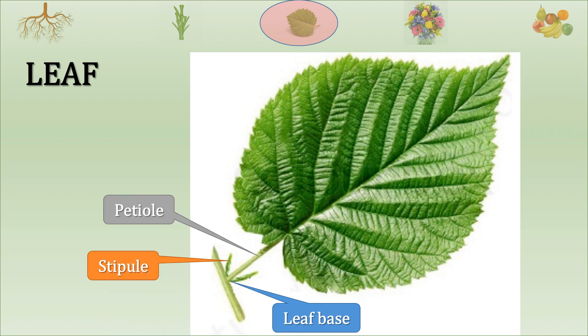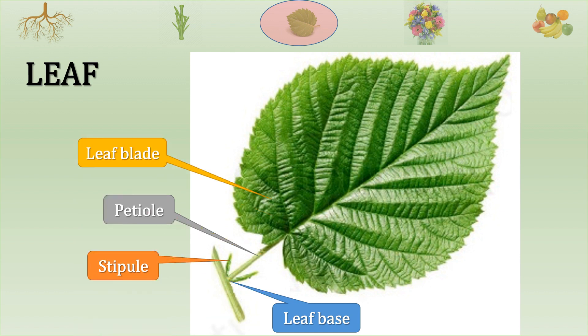Leaves of some plants have a stalk called a petiole. The broad spread out part of the leaf is called the leaf blade, and its edge is called leaf margin.